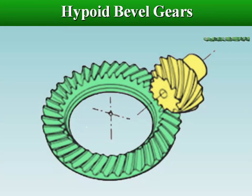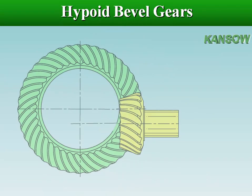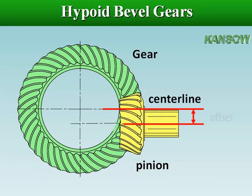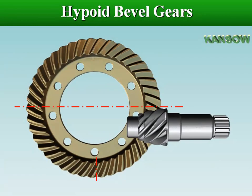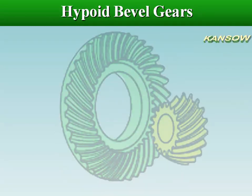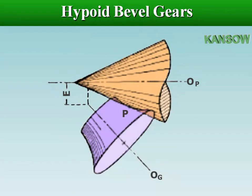Hypoid gears are a modification of the spiral bevel gear with the axis offset. The hypoid pinion is offset from the gear center, allowing unique configurations and a large diameter shaft. Hypoid bevel gears are used to transmit power between two non-parallel, non-intersecting shafts. The pitch surface of a hypoid gear appears conical but, to compensate for the offset shaft, is in fact a hyperboloid of revolution, as opposed to a spiral bevel gear which is normally conical. Its pitch surface is composed of a conical surface and a line-contacting surface of revolution.